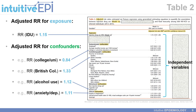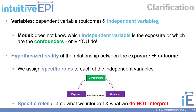Going back to the clarification made on the Dagitty website, we can have a dependent variable — our outcome of interest, such as food insecurity — and a variety of independent variables. The model does not know which independent variable is the exposure or which are the confounders. Only you, the researcher or reader of a paper, know which role each independent variable is playing. Therefore, it's important to have a hypothesized reality of the relationship under study, or a conceptual framework, where you've reviewed the literature and attempted to understand how your exposure is associated with your outcome. After doing this, you should assign specific roles to each of your independent variables of interest.